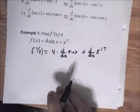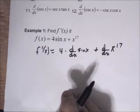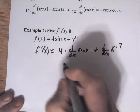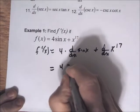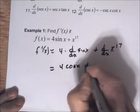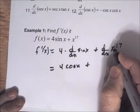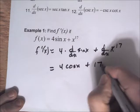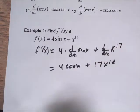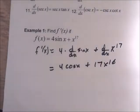Now we can use rule number 7: the derivative of sine is cosine. And we can use the power rule from last week. The derivative of x^17 is 17x^16. So that's the derivative.